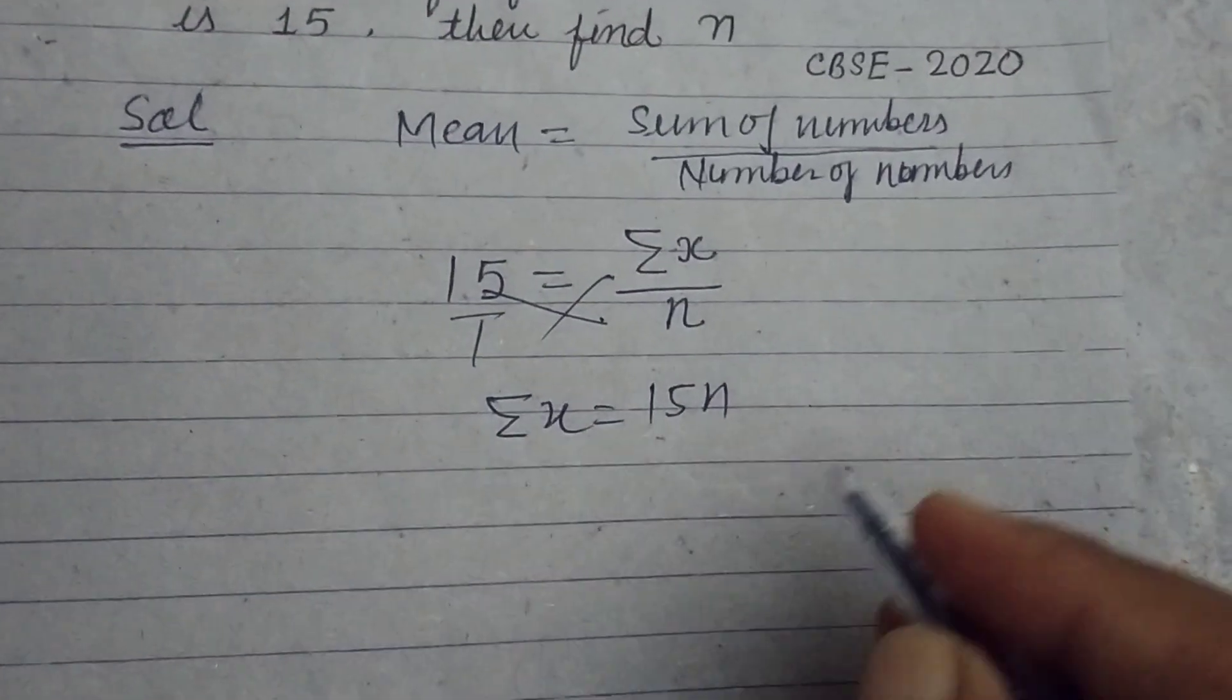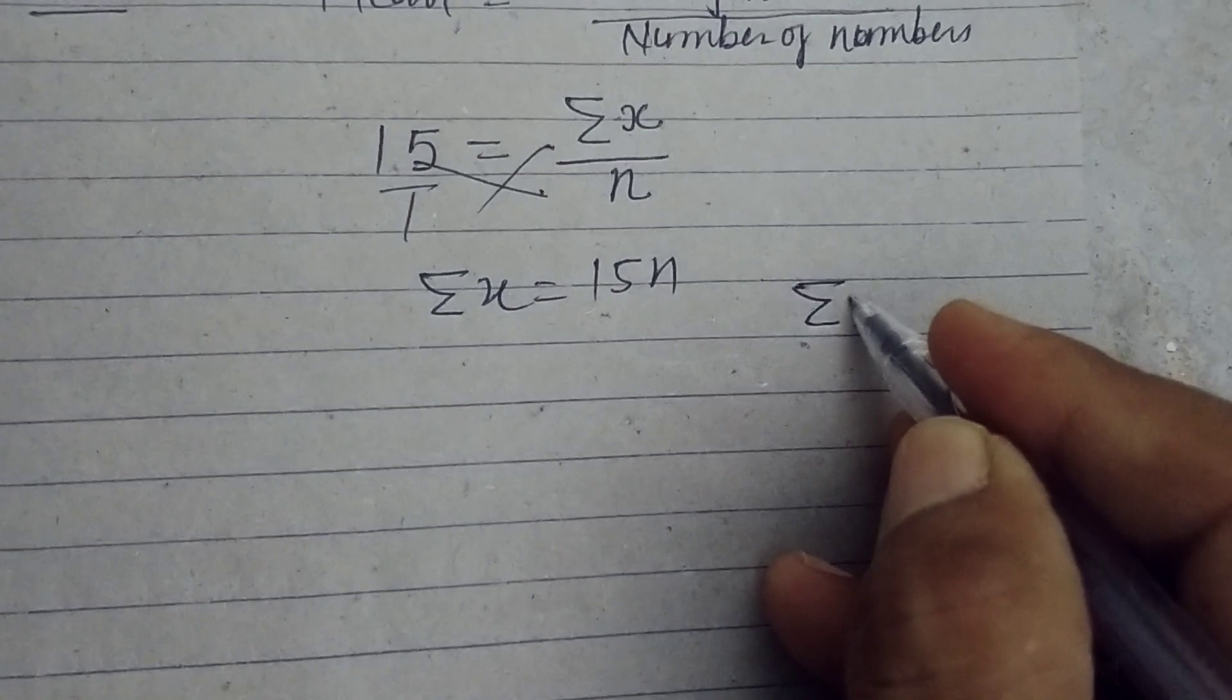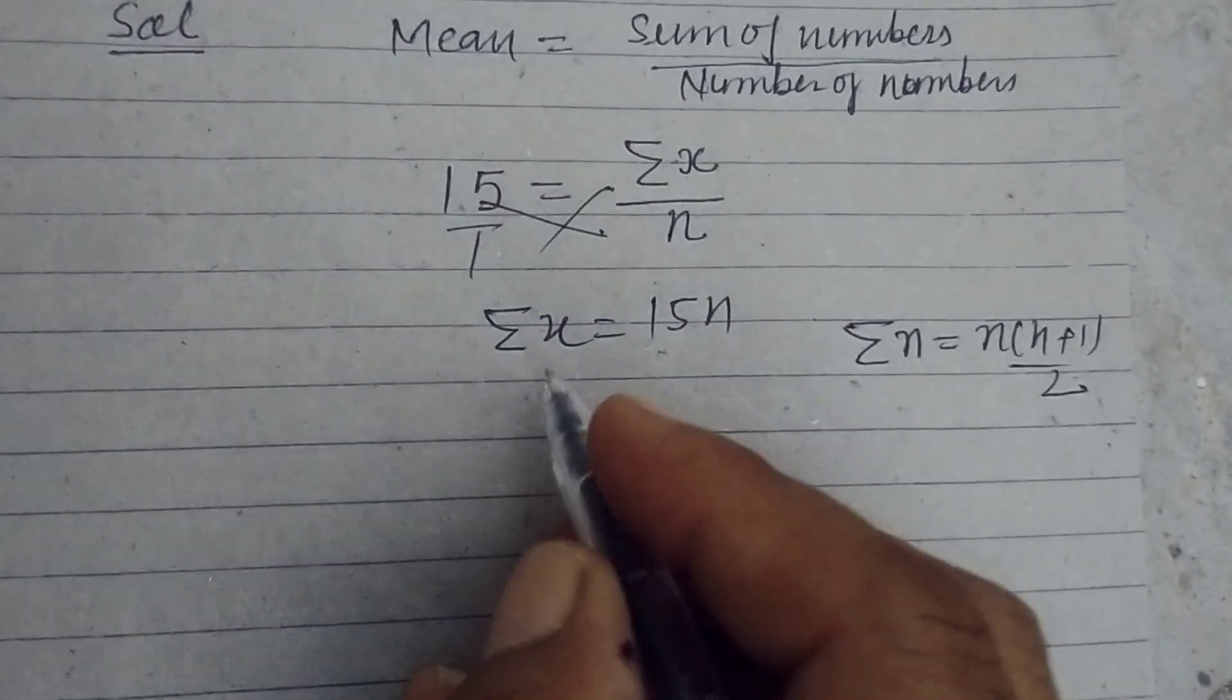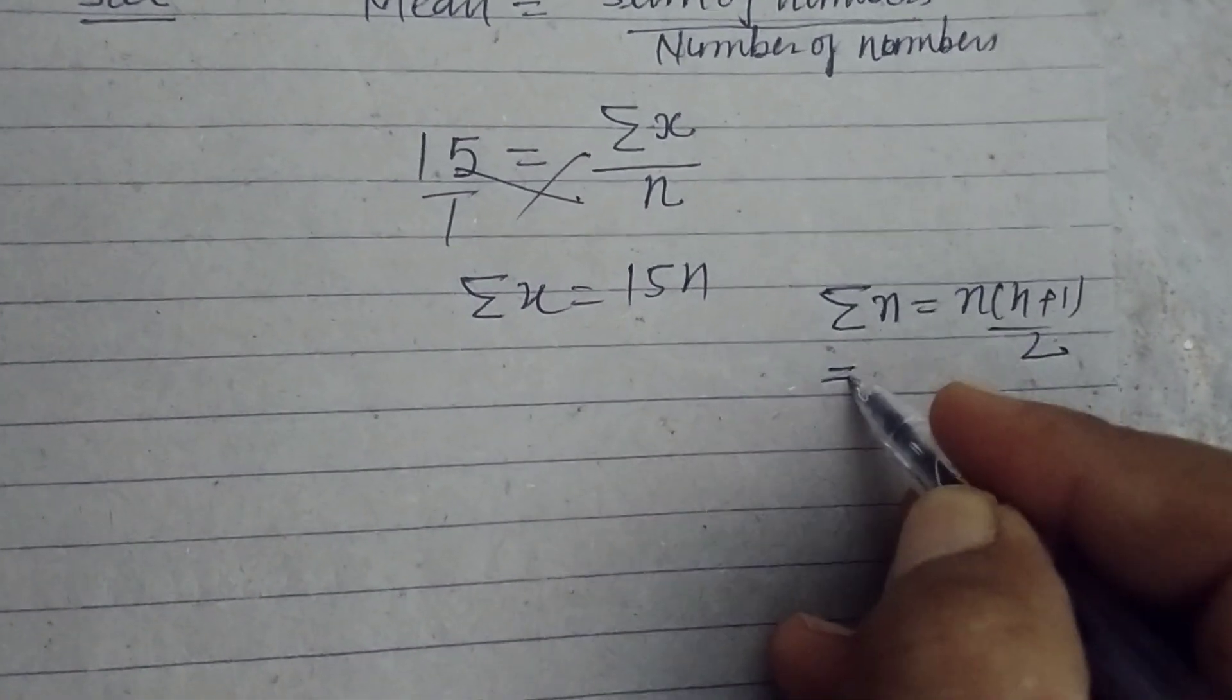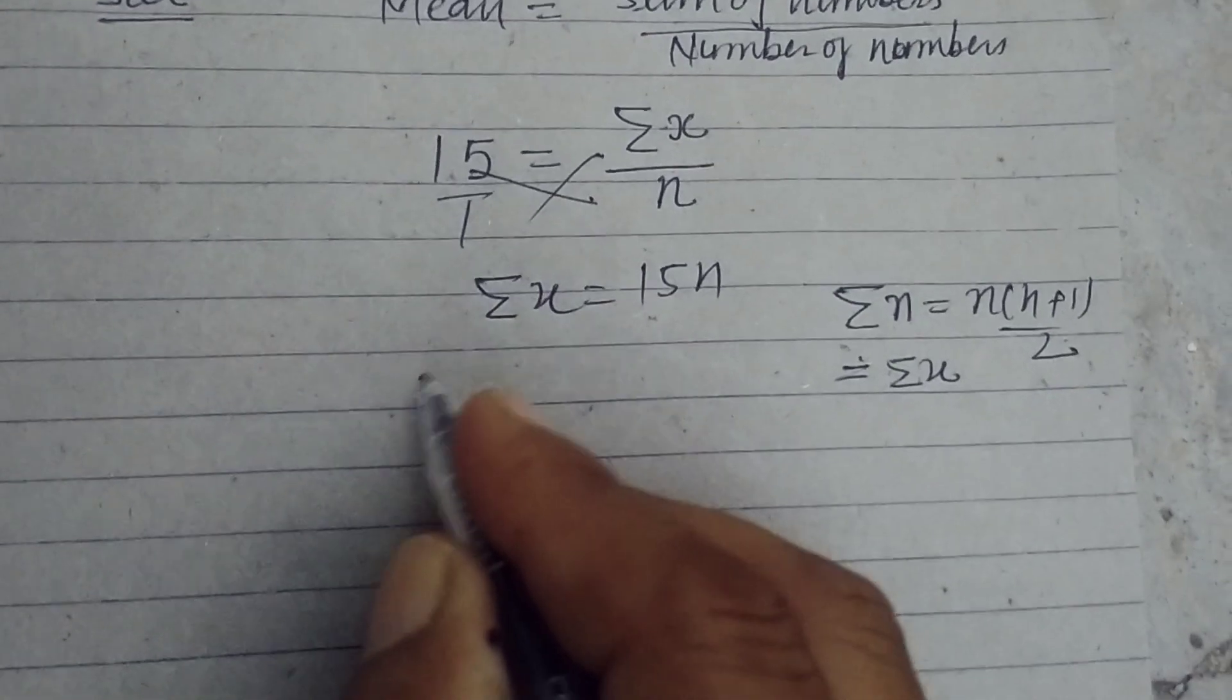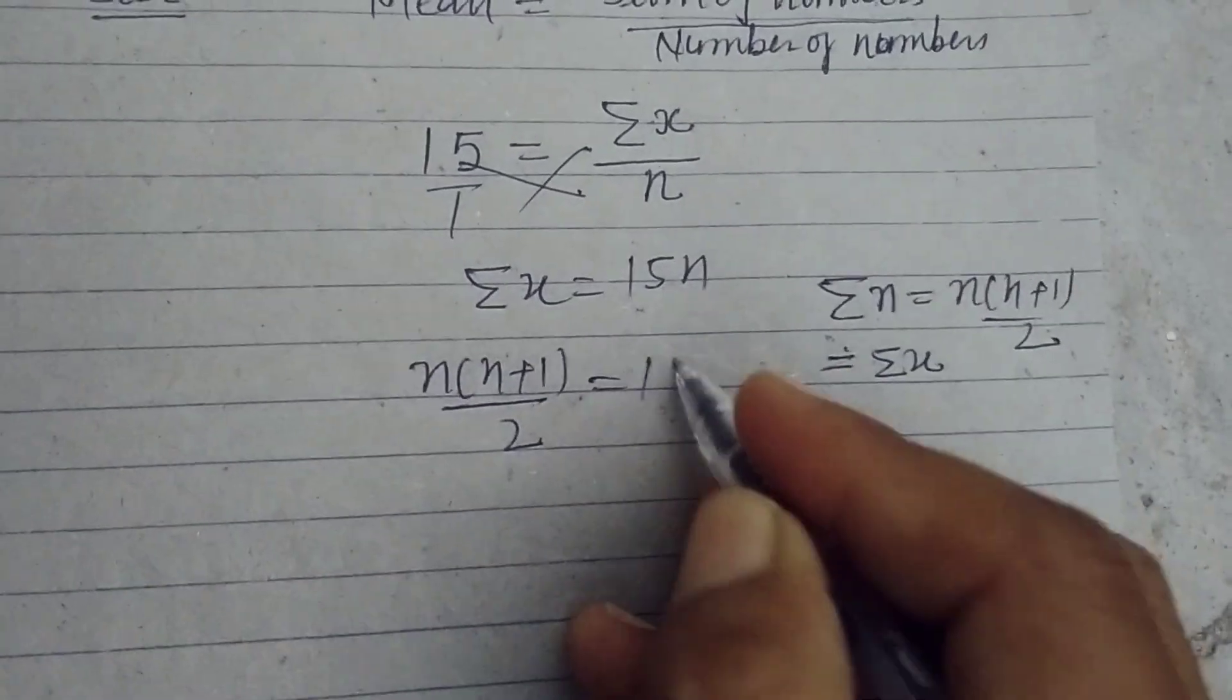Here, the natural numbers are n. So the sum of n natural numbers is n times (n+1) divided by 2. This equals sigma x. So n times (n+1) divided by 2 equals 15n.